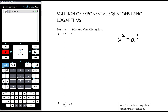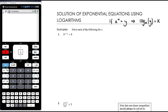If, however, we cannot express both sides with the same base, we're going to use logarithms. The key thing is the conversion from an exponential relationship to a logarithmic relationship. We know that if a^x = y, the equivalent log statement is log base a of y equals x — the base of the exponential becomes the base of the log.